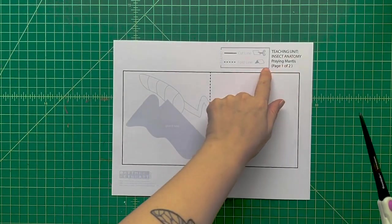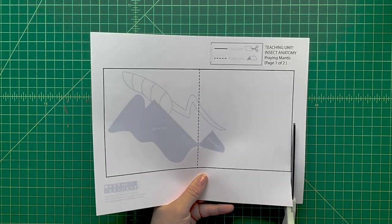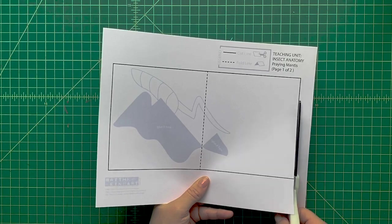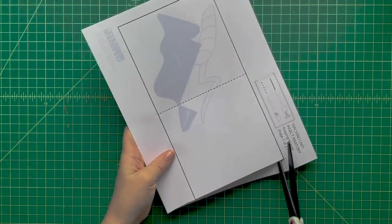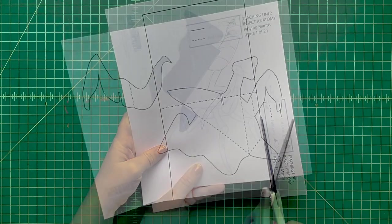After you've scored all the dotted lines, you're going to cut out all the pieces using scissors. How do you know where to cut? Just follow the solid black line. Take your scissors and cut along all the solid black lines.